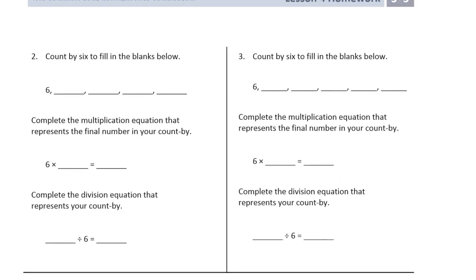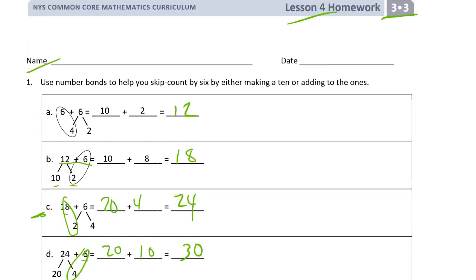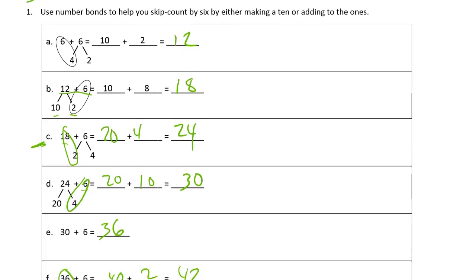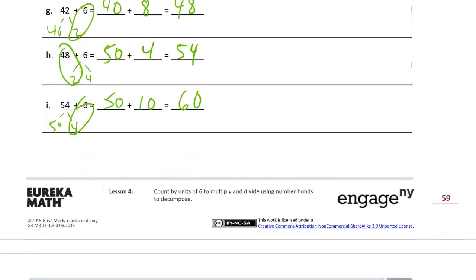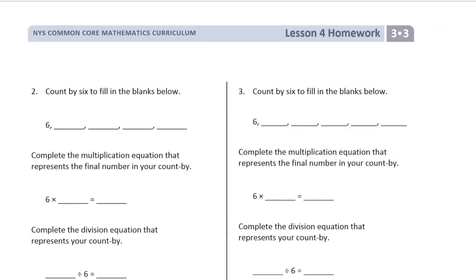Count by six to fill in the blanks below. We just did that: six, twelve, eighteen, twenty-four, thirty, thirty-six, forty-two, forty-eight, fifty-four, and sixty.